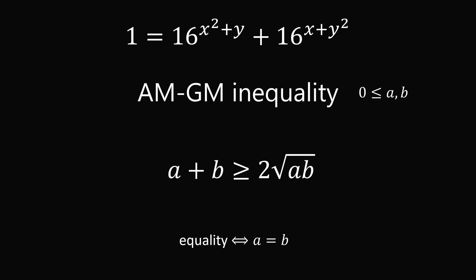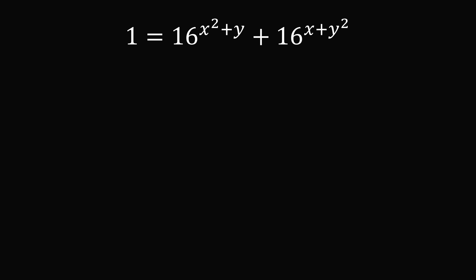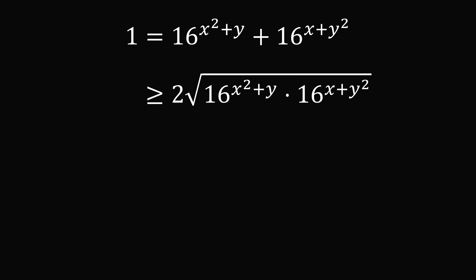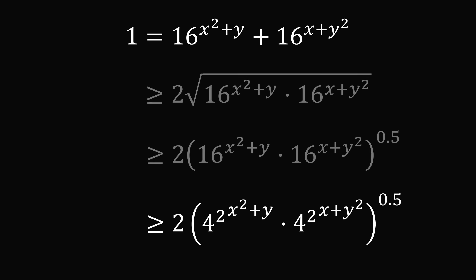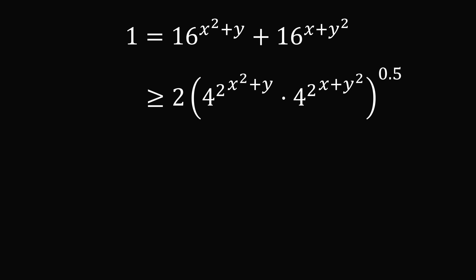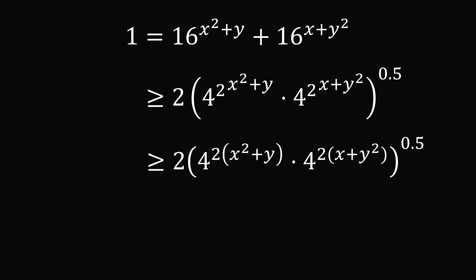Let's apply the AM-GM inequality to this problem. We are summing two terms which we know are greater than zero. By the AM-GM inequality, this will be greater than or equal to 2 times the square root of their product. We are now going to rewrite this expression in many ways, but we will keep this greater than or equal to sign so that we remember that 1 is greater than or equal to the result. First we'll rewrite the square root as raising to the power of 0.5. Then 16 is equal to 4 squared. We have 4 squared being raised to some power, so we can simplify this by taking the product.